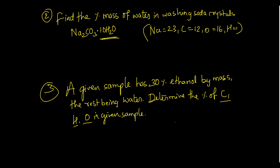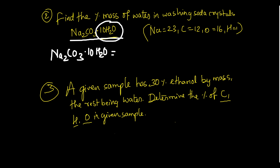Next question: find the percentage mass of water in washing soda crystals. The formula of washing soda is sodium carbonate decahydrate: Na₂CO₃·10H₂O. Atomic masses: sodium 23, carbon 12, oxygen 16, hydrogen 1. First, find the molecular mass of Na₂CO₃·10H₂O. Calculating that gives a molecular mass of 286.